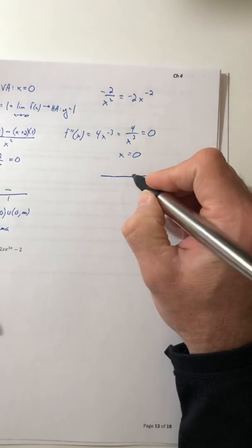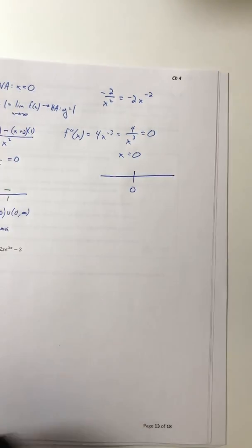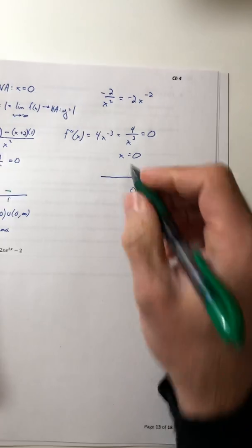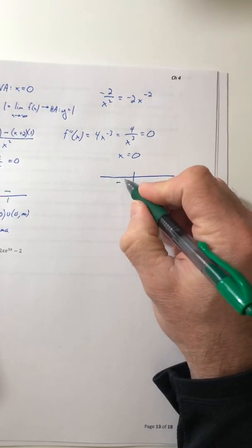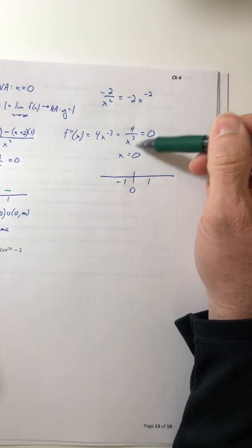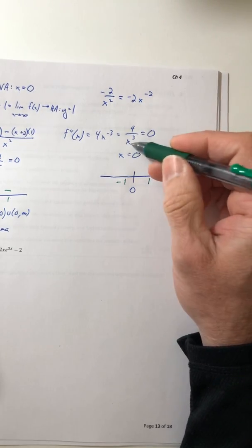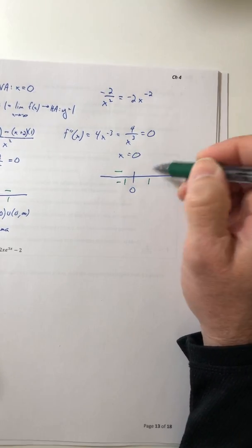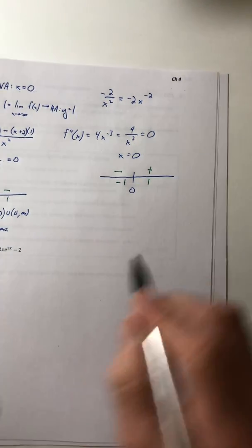So let's still test it and see what concavity says. So negative one and one, plug them into the second derivative. So the negative comes out as a negative, positive one comes out as a positive. So concavity does switch.